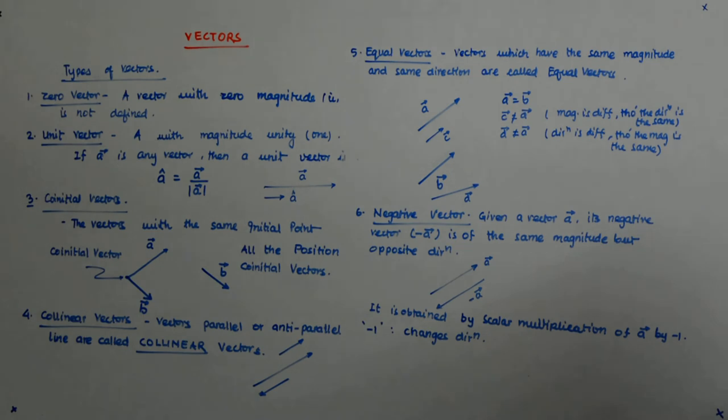So those are different kinds of vectors and we will soon know why we have defined some of them, though at this stage they may look weird.